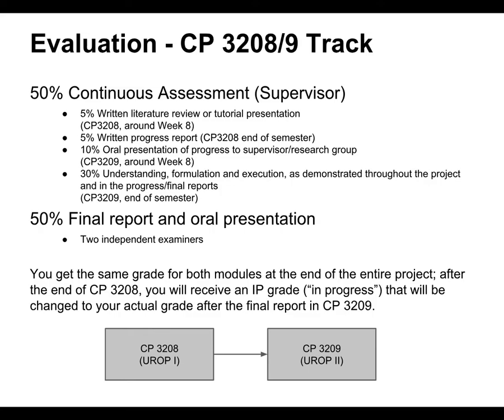You have to convince people that your work is good — that comes in the second half of the project in CP3209. Around week 8, students doing their second semester need to do an oral presentation to their project group. At the end of the semester, they write their final report, which is worth 30% of the whole grade. Independent examiners see you only once at the end of both semesters for your project presentation, which you need to impress them on to get a good grade.